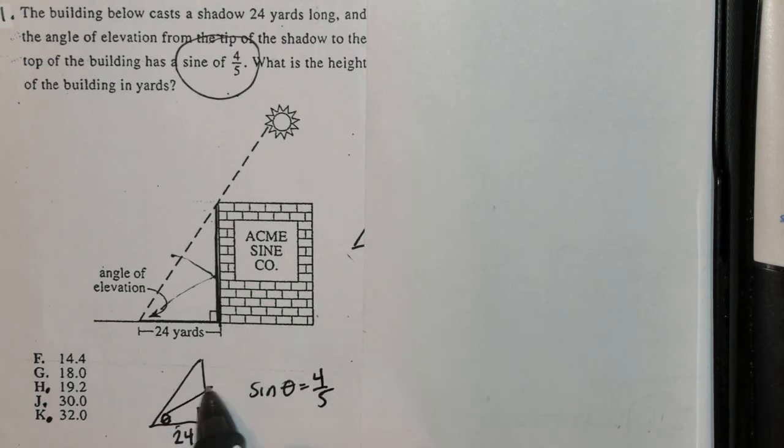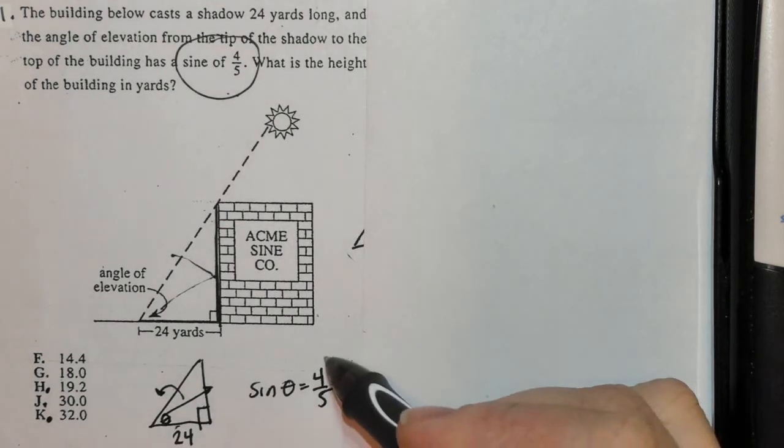Sine is opposite over hypotenuse. Now, this should ring a bell with you.